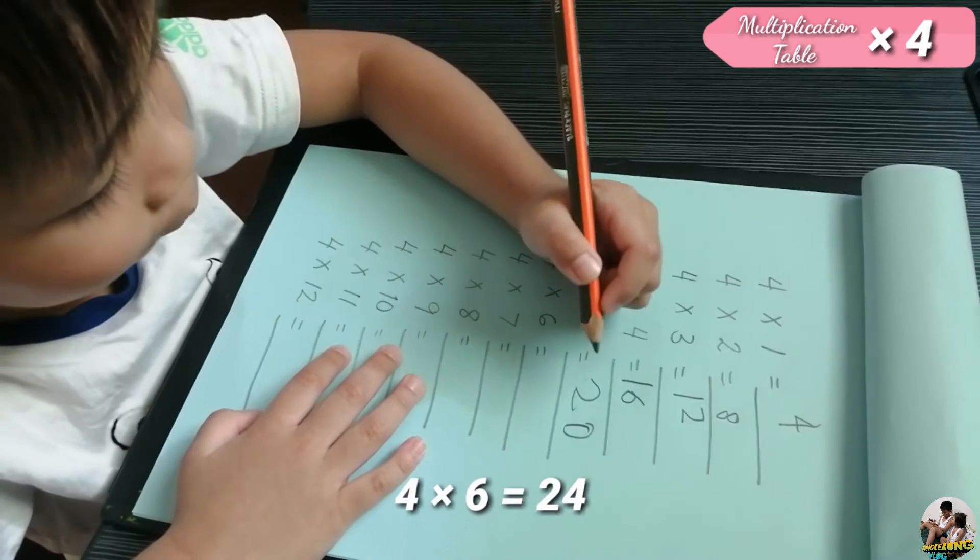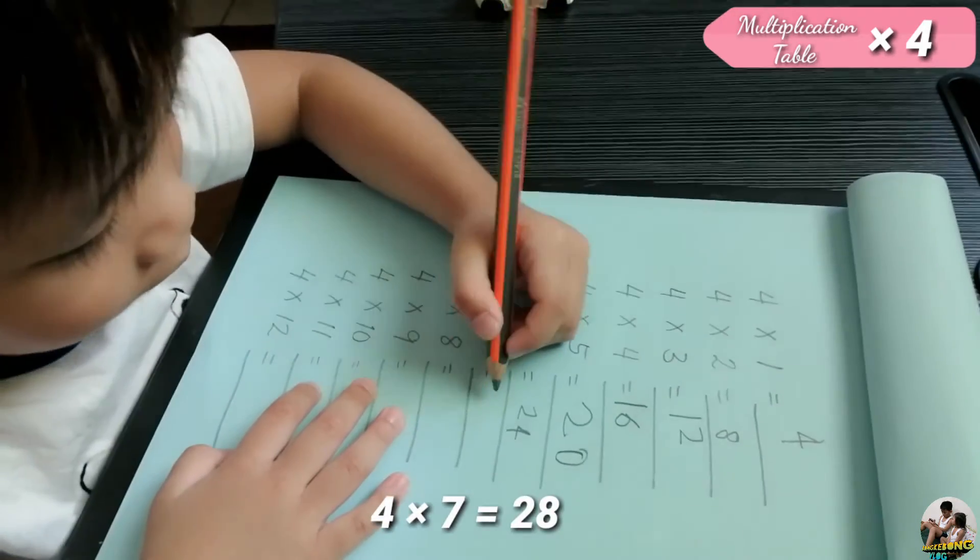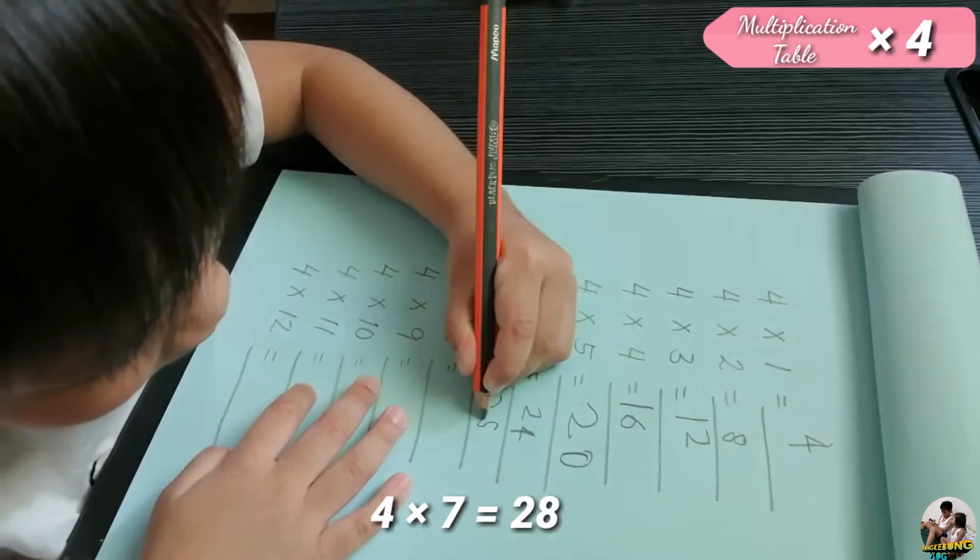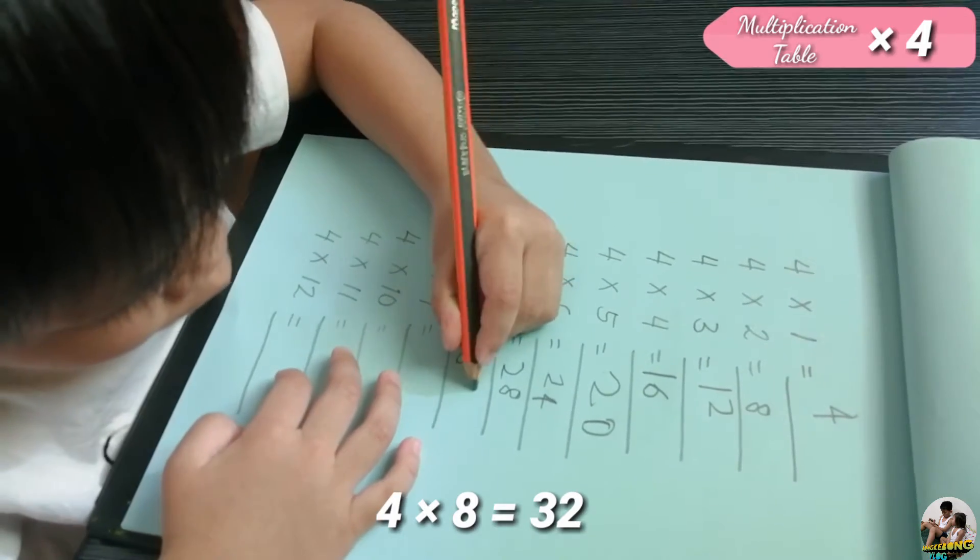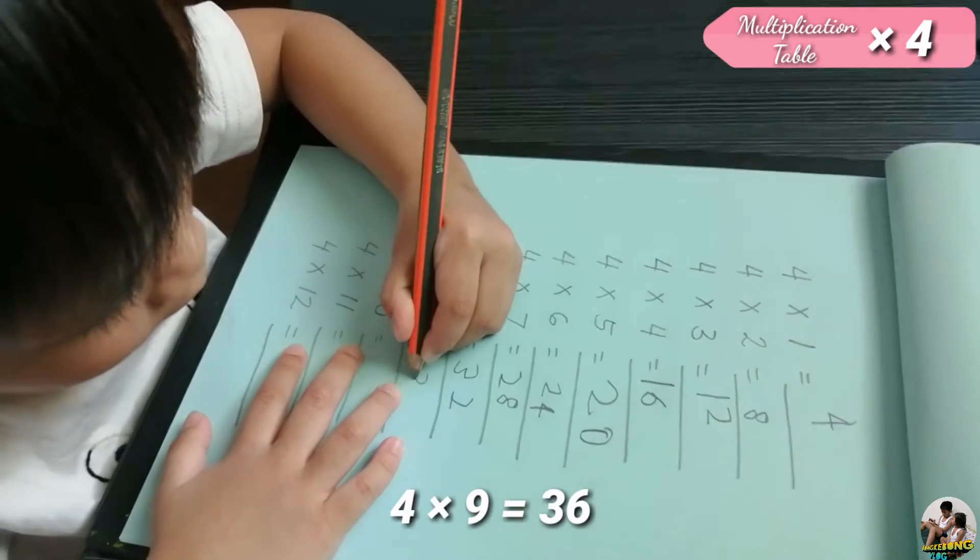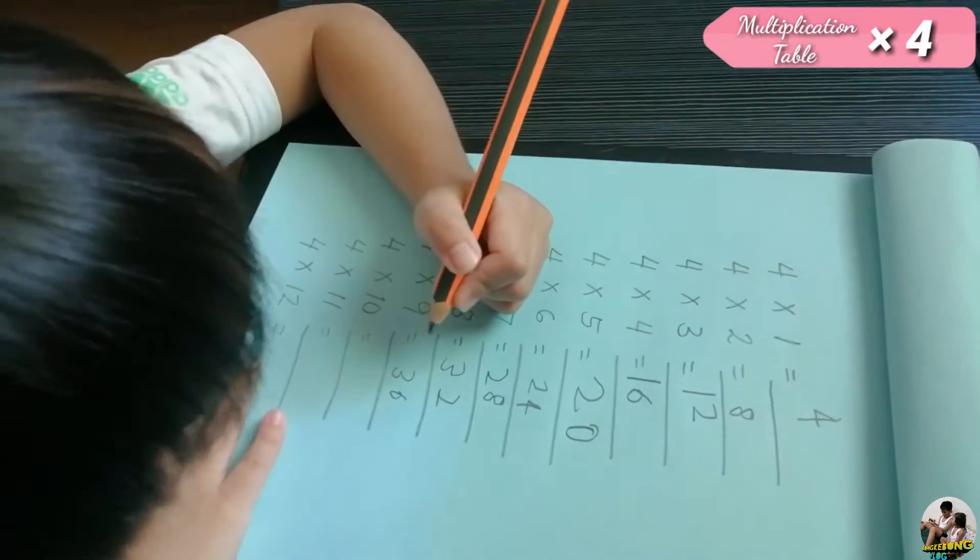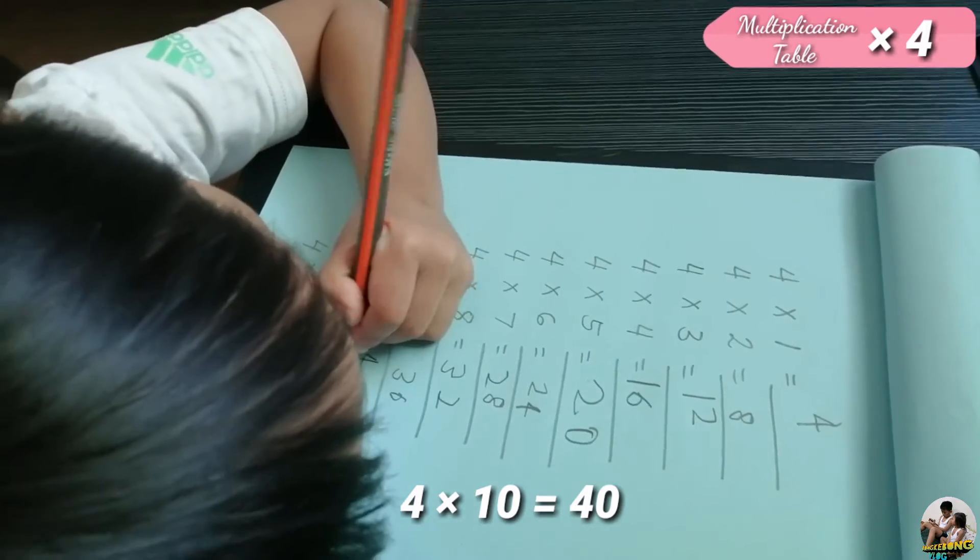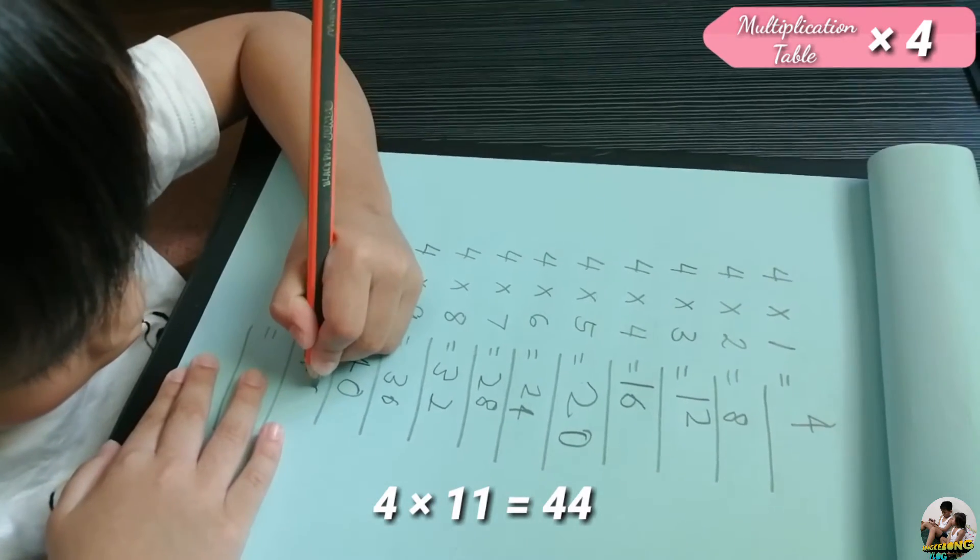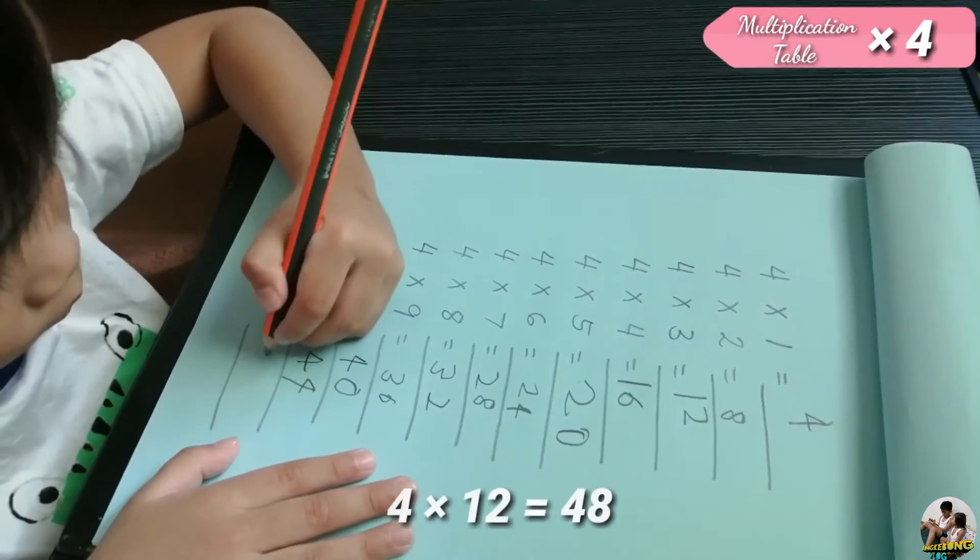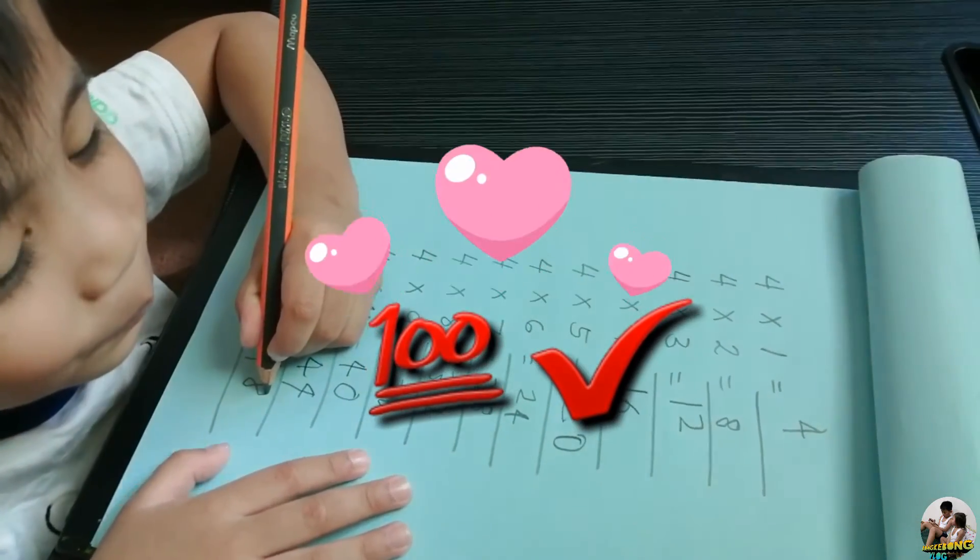Four times six equals twenty-four. Four times seven equals twenty-eight. Four times eight equals thirty-two. Four times nine equals thirty-six. Four times ten equals forty. Four times eleven equals forty-four. Four times twelve equals forty-eight. Amazing! Very good!